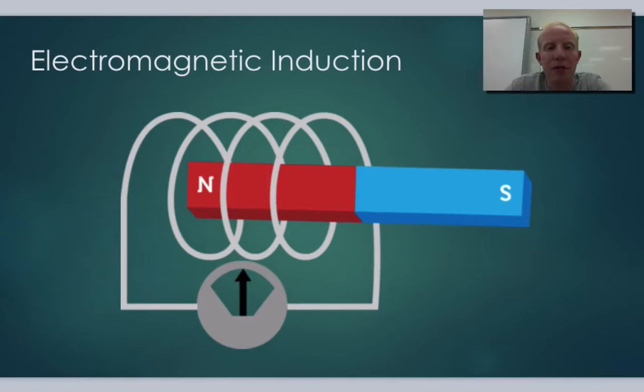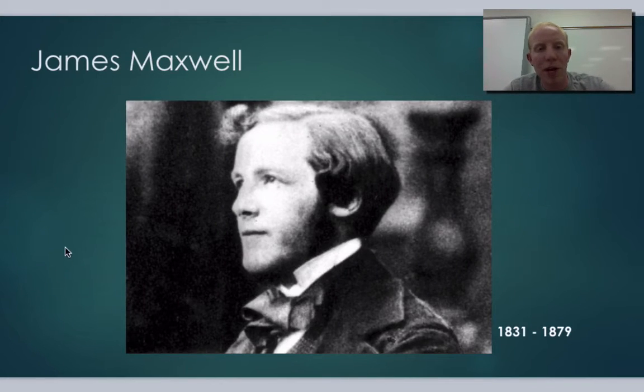So we've looked at how electricity affects magnetism and how magnetism affects electricity. We kind of physically see these things occurring. Michael Faraday shows this when he makes his motor. We can physically see what's going on, but we haven't been able to describe mathematically what's going on. And historically, no one could until a man by the name of James Clark Maxwell.